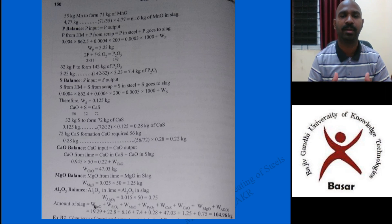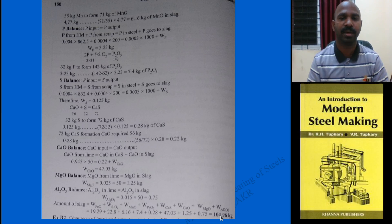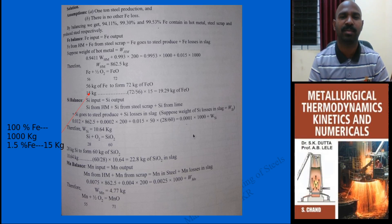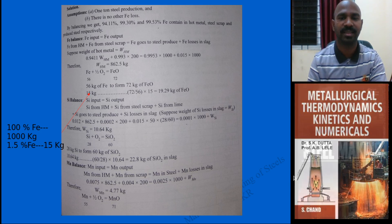The second question asks for the total amount of slag produced. You sum up all slag components: FeO, SiO2, MnO, P2O5, CaS, CaO in slag, MgO, and Al2O3. When summed, the total slag produced comes out to approximately 104 kg. This much slag is produced with respect to 1 ton of steel production.